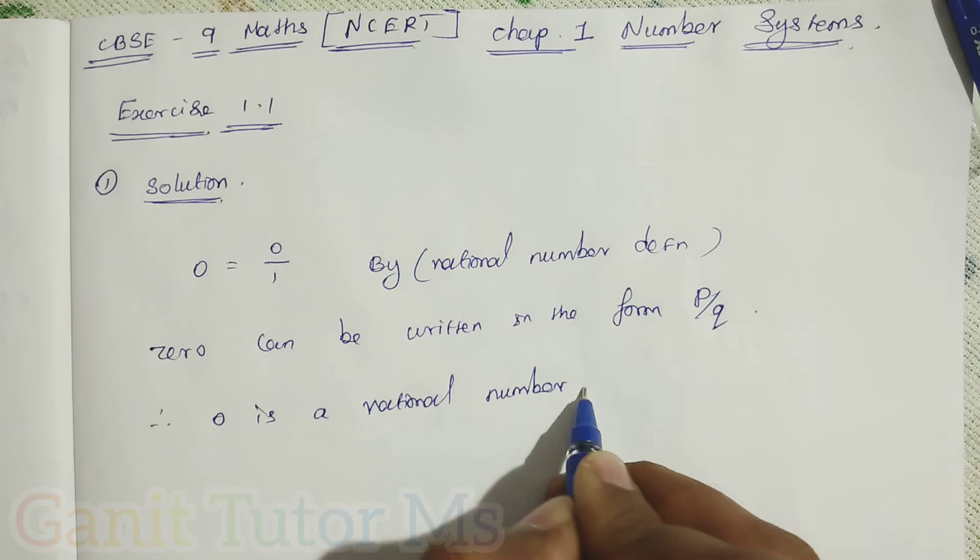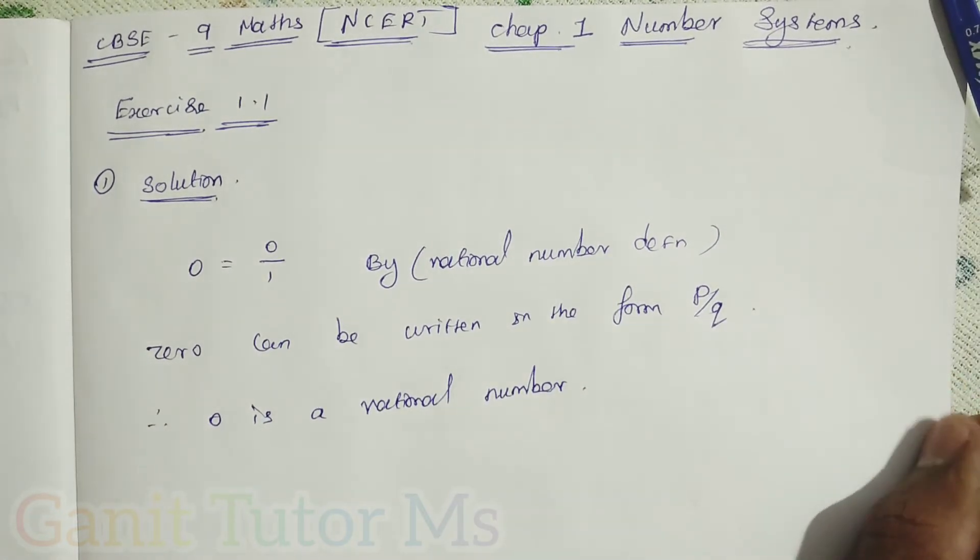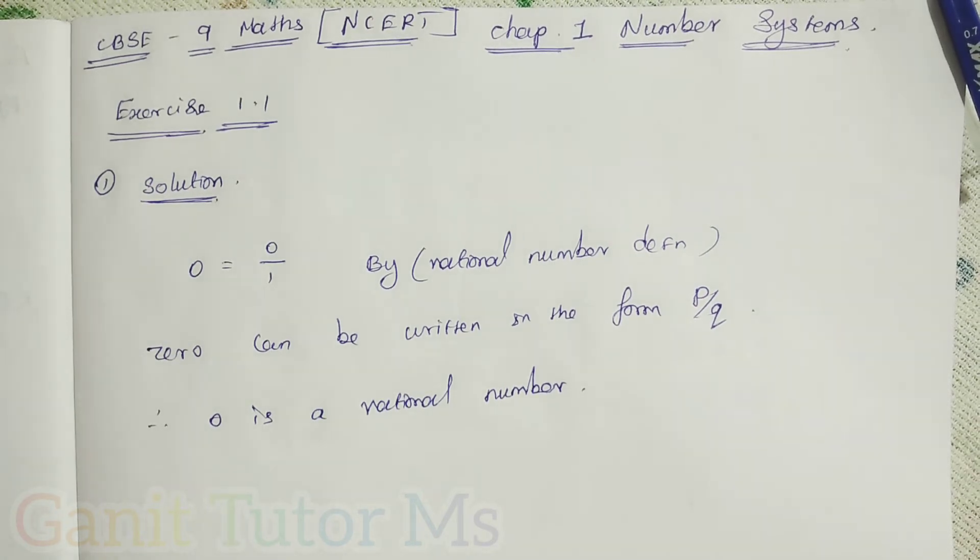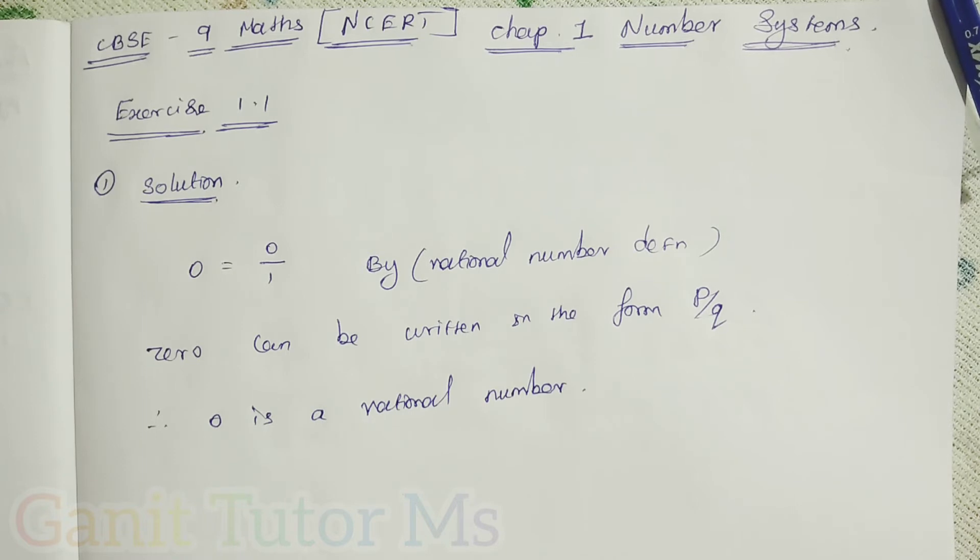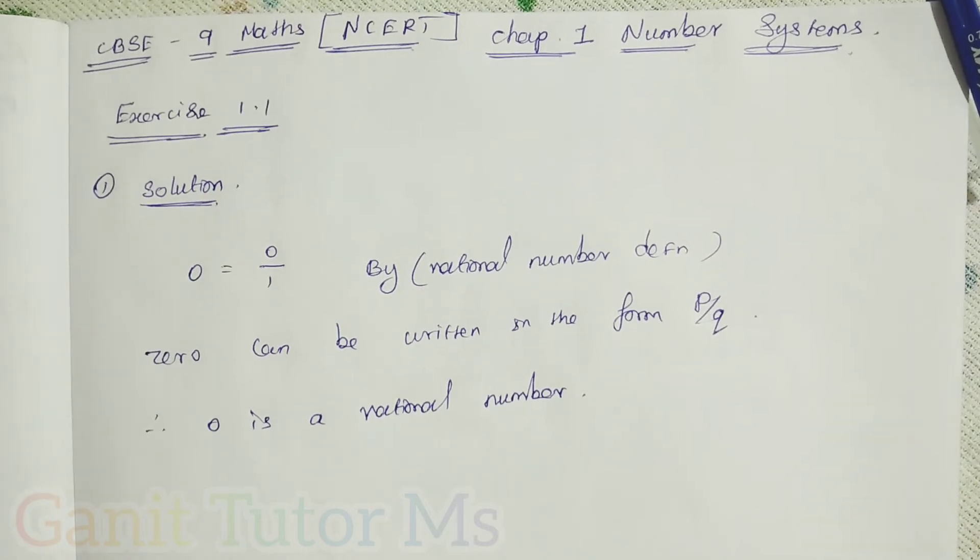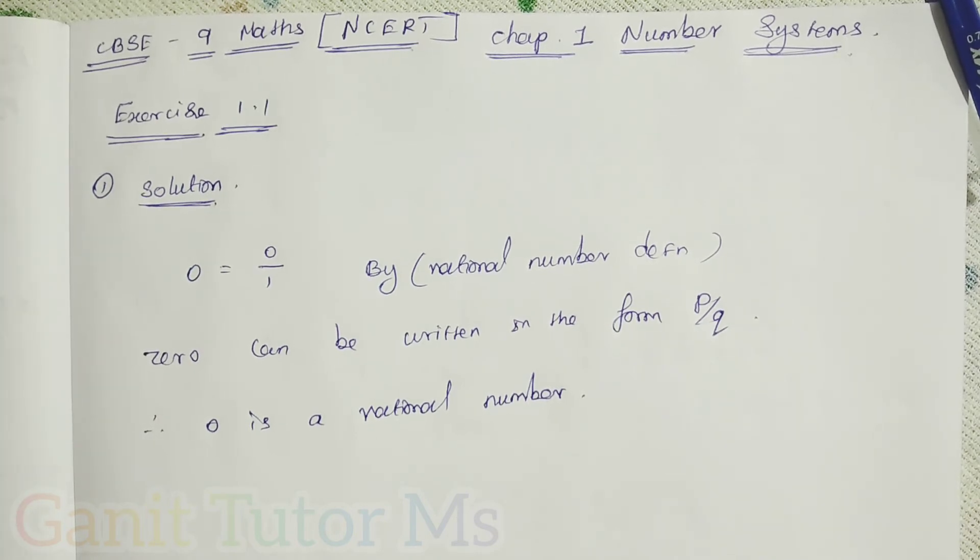Are you all clear? Now, you can tell me, is 1 a rational number or not? Yes, 1 is a rational number because 1 equals 1 by 1. Next here, minus 2. Yes, minus 2 is also a rational number because minus 2 can be written in the form of p by q, that is minus 2 by 1. Are you all clear? Any doubt? It is a more important one mark question. So, 0 is a rational number. Clear?